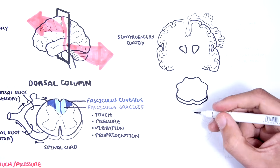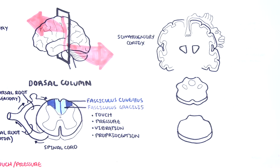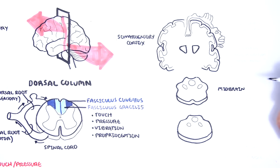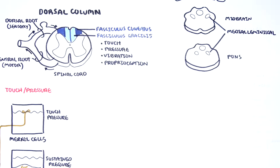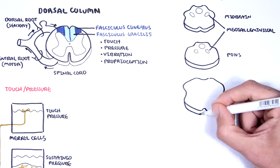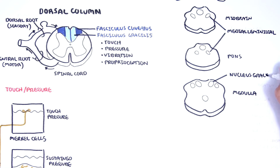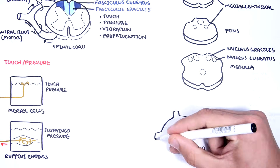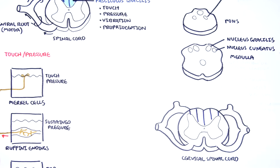Let's recap the anatomy again quickly. Here again is the somatosensory cortex, the midbrain, pons, and the medial lemniscal tracts, as well as the medulla, which has the nucleus gracilis and the nucleus cuneatus. The spinal cord is here — let's say it's the cross-section of the cervical spinal cord.